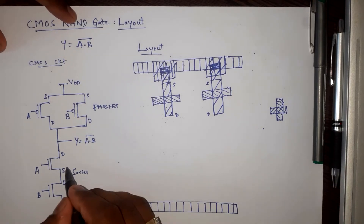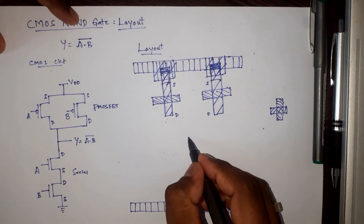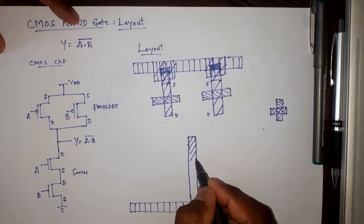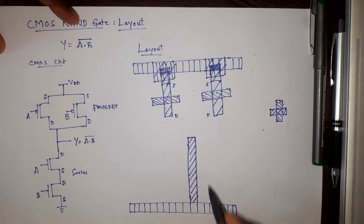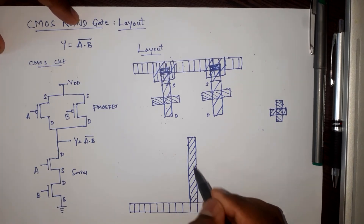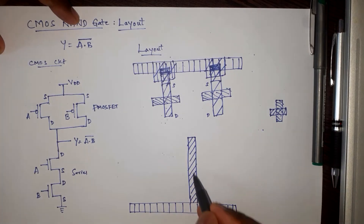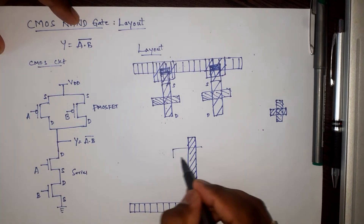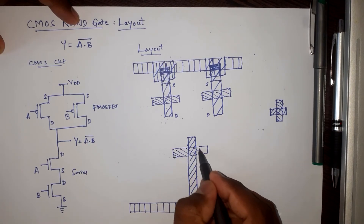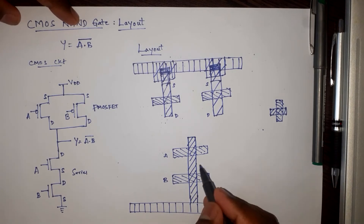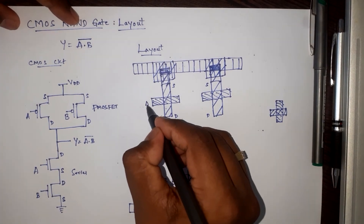Now I will place the two transistors in the pull-down network, which has two N-type transistors connected in series. Let me draw a single N diffusion connected to the ground metal. Since it is N diffusion, I draw the lines closer to represent N diffusion. I take a common N diffusion because the source and drain are shared between the two series transistors. If I place one polysilicon here, this makes a transistor with gate input A, and if I place one more polysilicon layer over here, this is the transistor with input B — so A and B are connected in series.